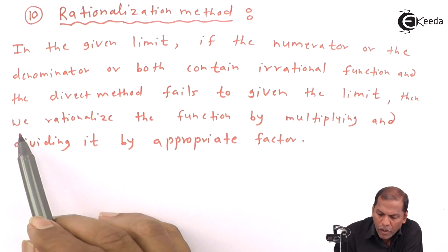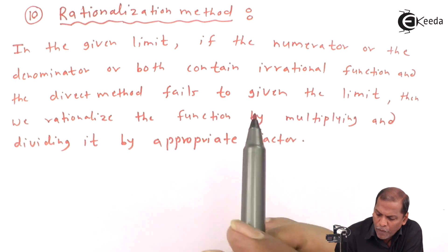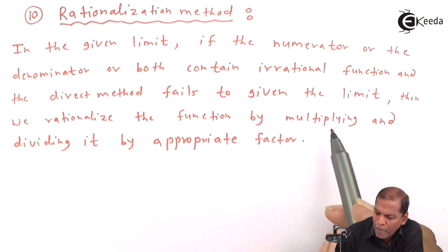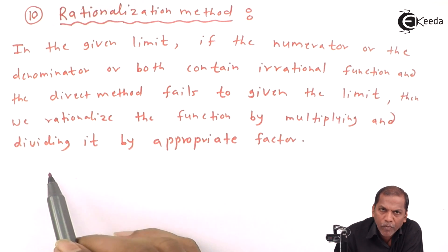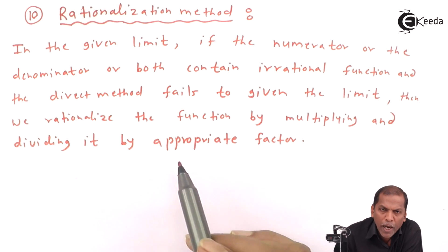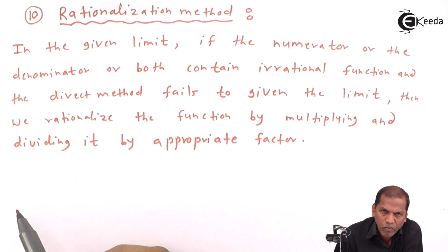then we rationalize the function by multiplying and dividing it by appropriate factor. And then we can easily solve the limit and we get a proper answer.